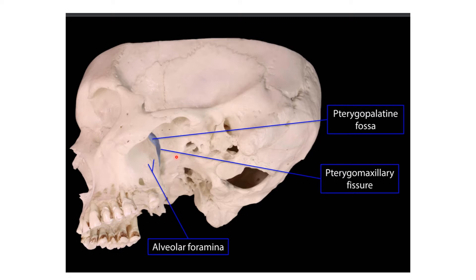The medial wall is separated from the anterior wall by the pterygomaxillary fissure. The anterior wall is formed by the infratemporal surface of the body of the maxilla. This is the maxilla bone and this is its infratemporal surface.